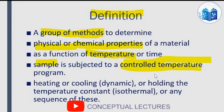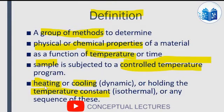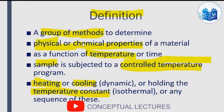A controlled temperature program means we can heat, cool, or hold the temperature constant — or any combination of these three sequences. We can heat, cool, or hold the sample at a constant temperature for some time, so that we can study the physical and chemical properties of the material.